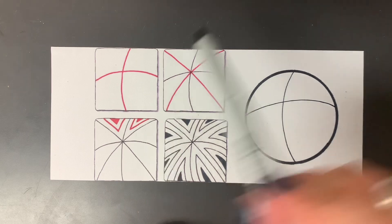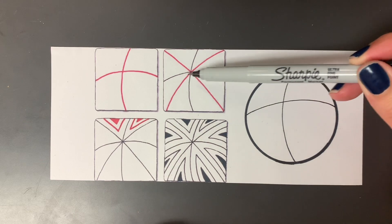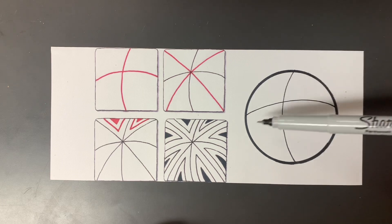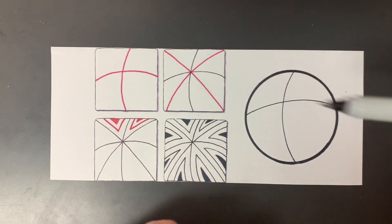Okay so then when I move on to step two I can see that the lines that I already drew are in black. That means I already drew them and you don't need to worry about them. So now I'm just going to follow the red lines that I see on there.